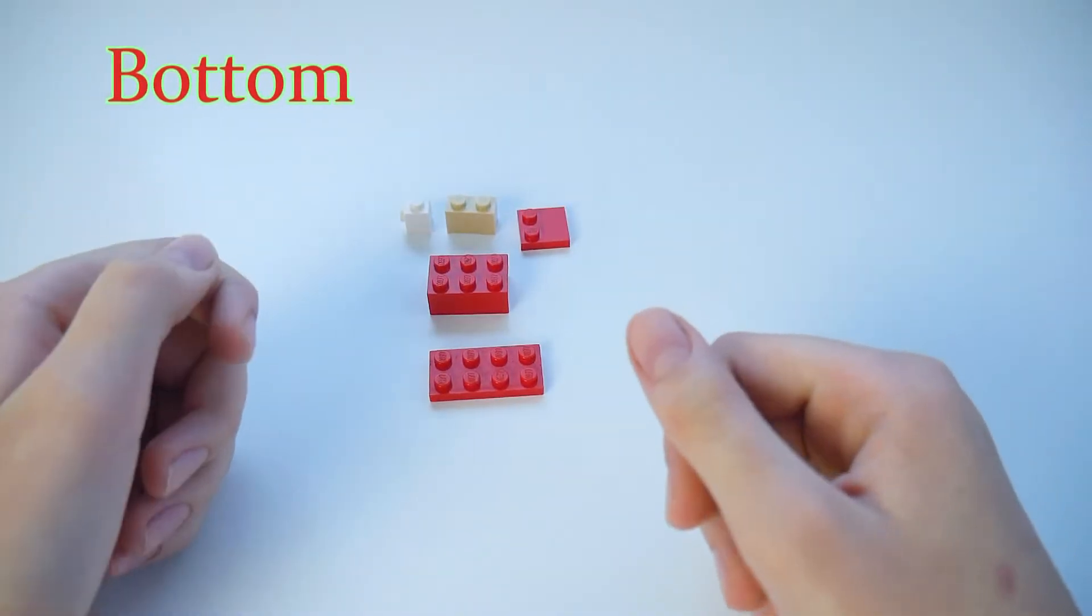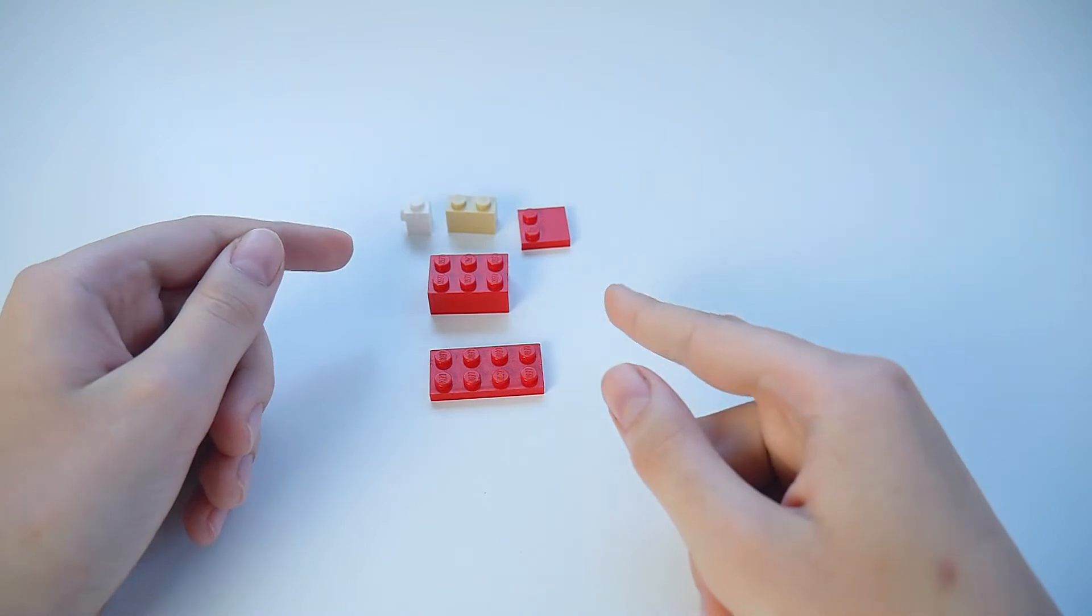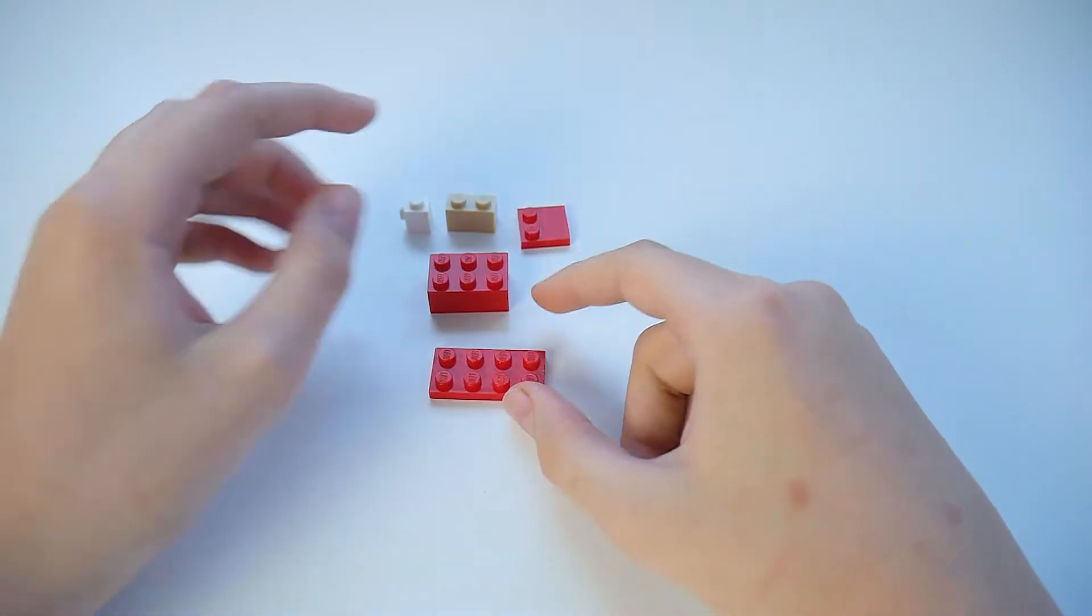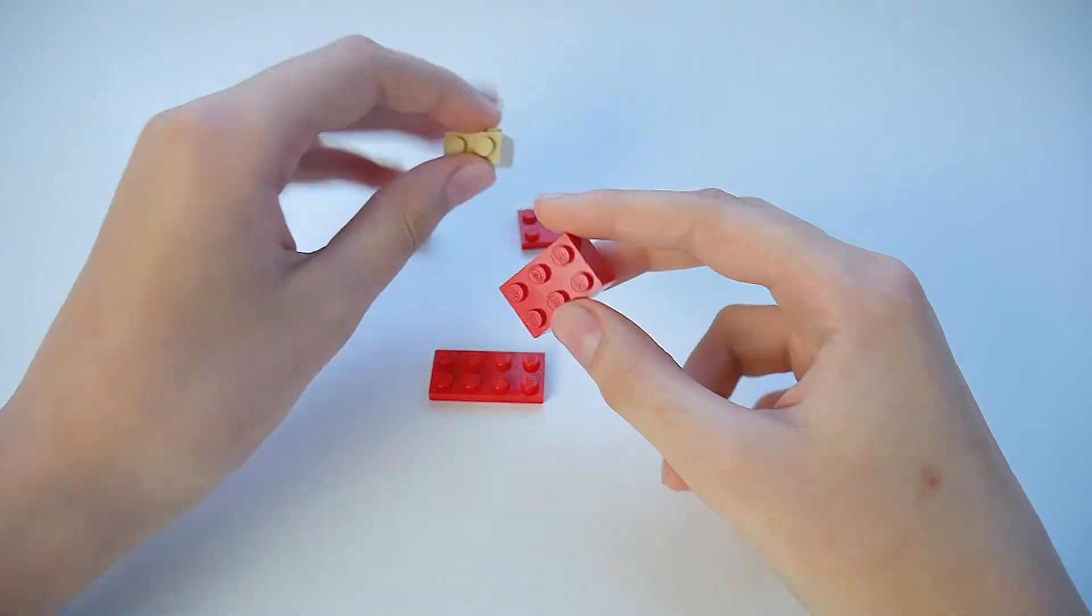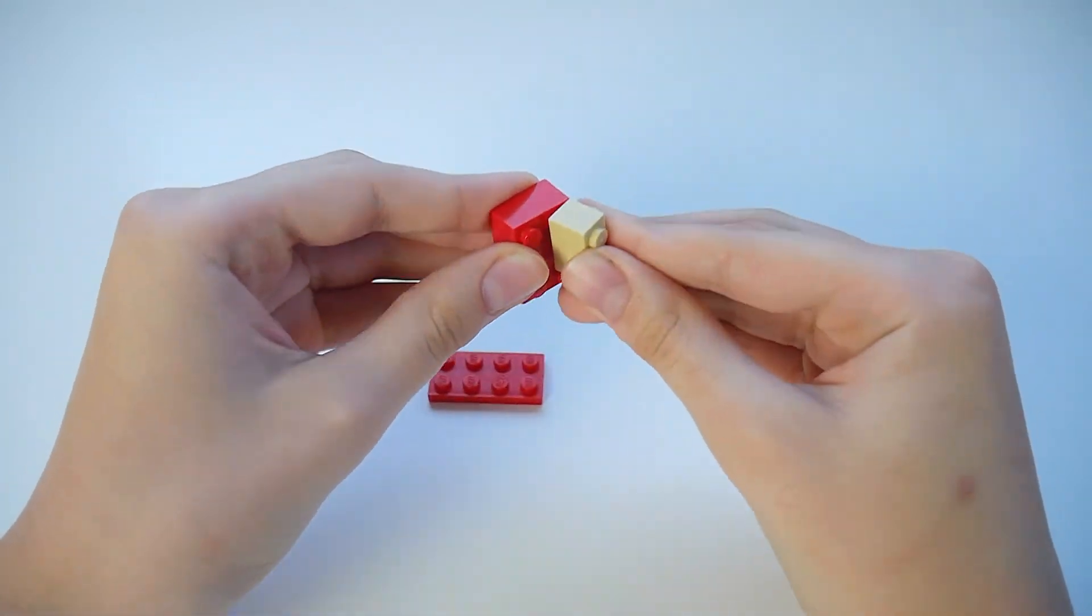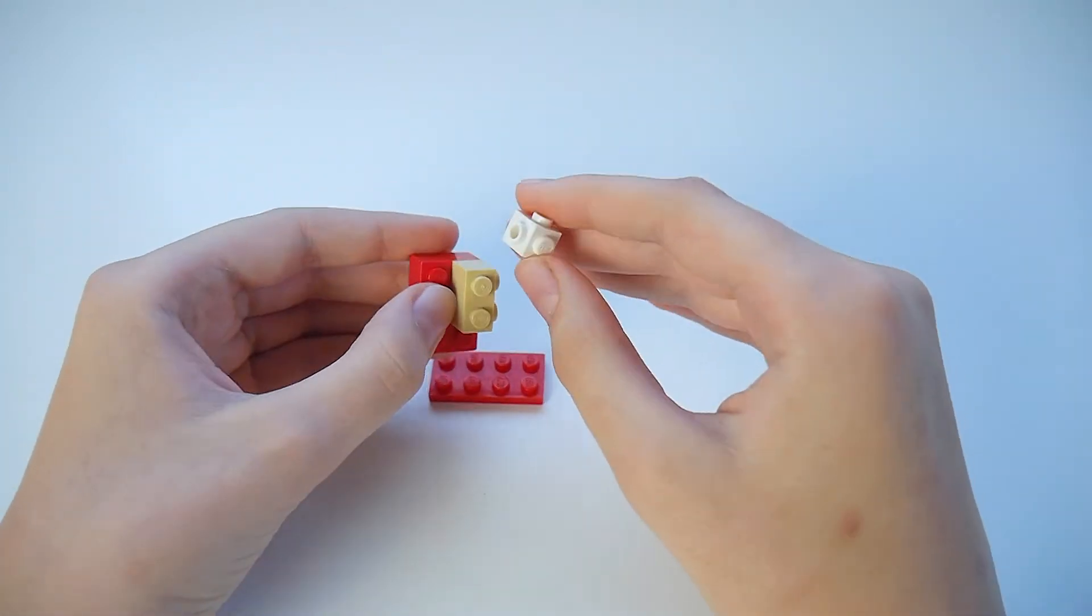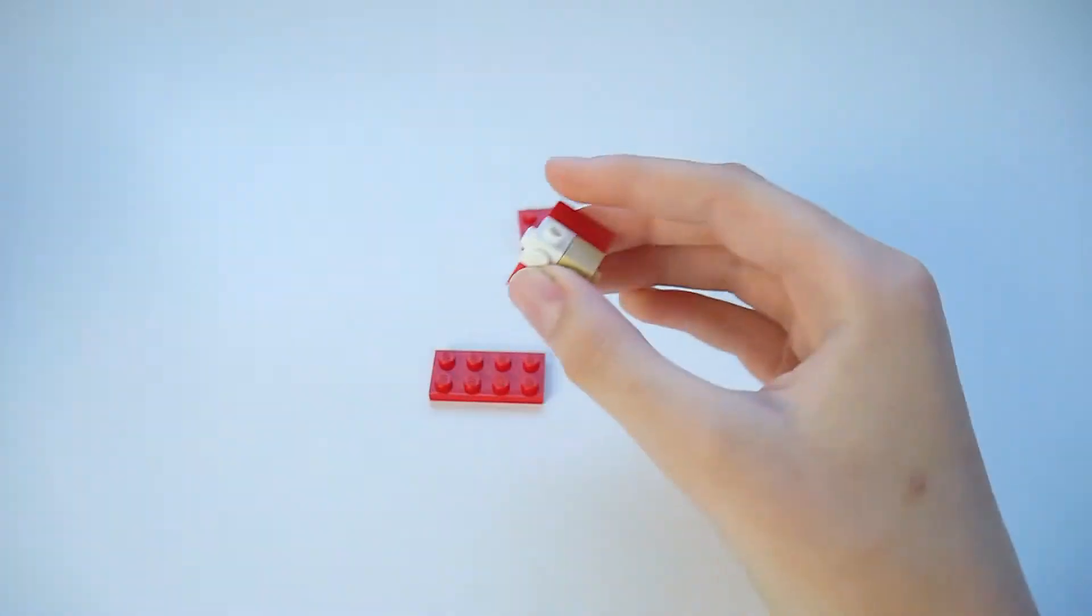So don't forget to like and subscribe before the video ends. Now these are the parts you'll be needing for the easiest stage in this entire build. We first take this 2x3 and we add side studded plus we need this side side studded.